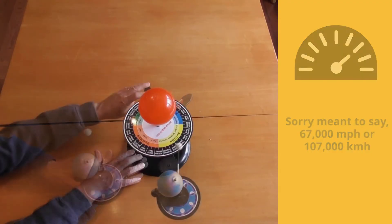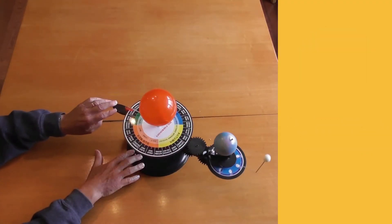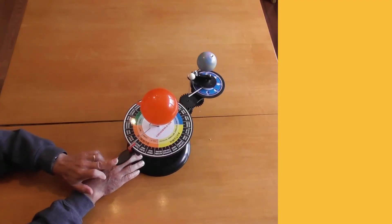Now, if you look at this orrery, there is one slight problem. As the Earth is traveling around, it's in a circle.